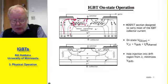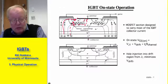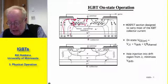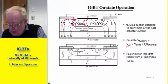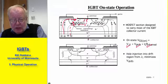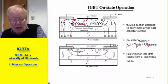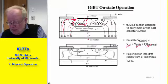In the on state, the collector-emitter voltage is composed of the junction drop across the injecting contact — that's junction J1 — plus the drift region drop and the channel region drop. Hole injection into the drift region from J1 is what minimizes the drift region drop, which is probably the largest component of the overall on-state voltage drop between collector and emitter.